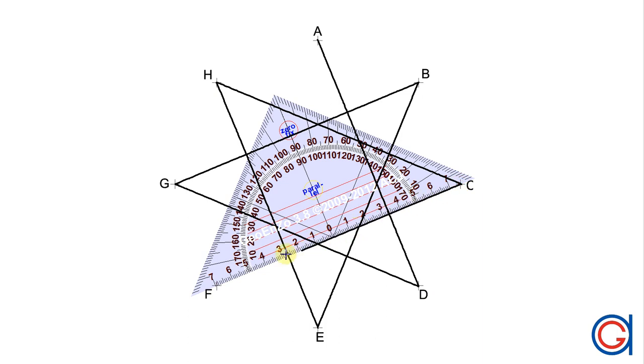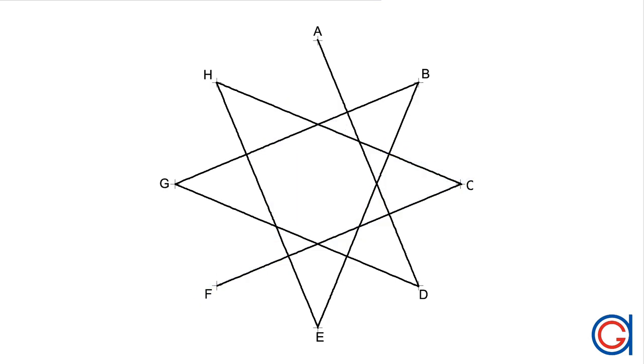Now we join vertex C to vertex F, skipping vertices D and E. And finally, we join vertex F to vertex A.